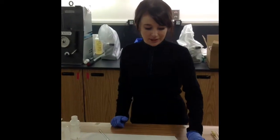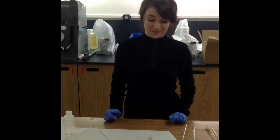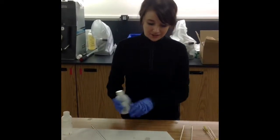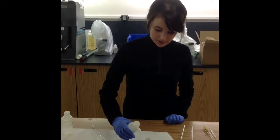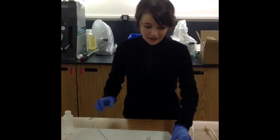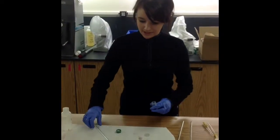First of all, I'm going to test my compound, my sample, for acidity, pH under 7. First of all, I'm going to take the litmus paper and I'm going to put a drop of water, and then I'm going to dip my glass stir rod into my sample.